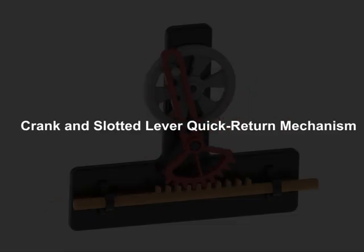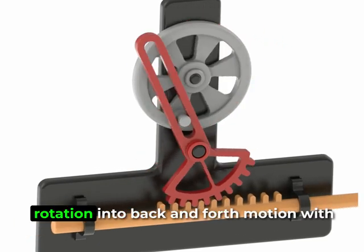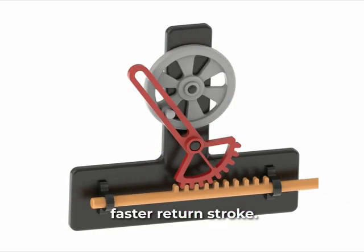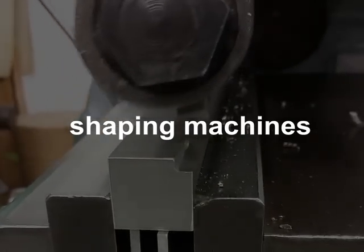The fourth is the crank and slotted lever quick return mechanism. It converts rotation into back and forth motion with a slow working stroke and a faster return stroke. This is common in shaping machines.